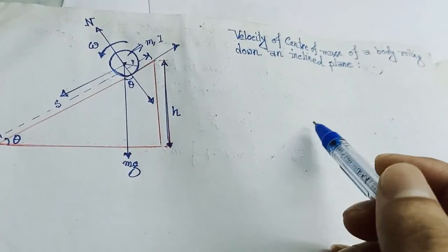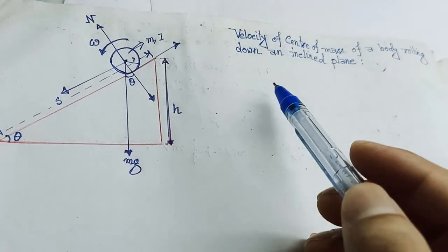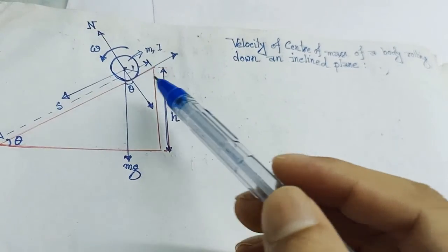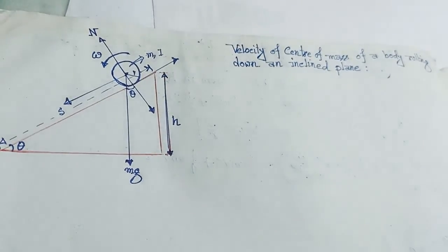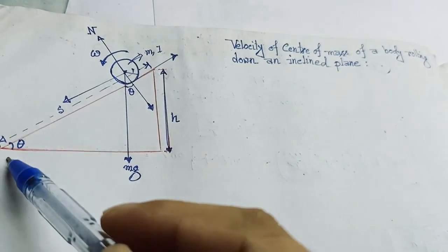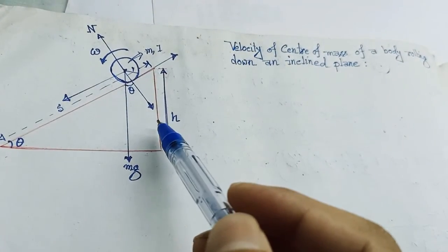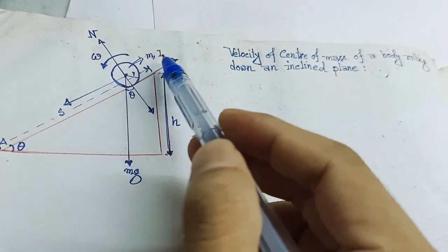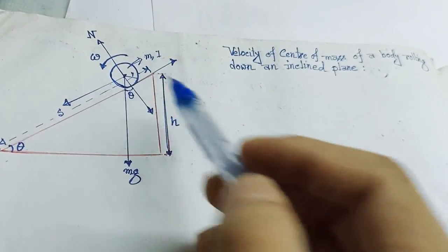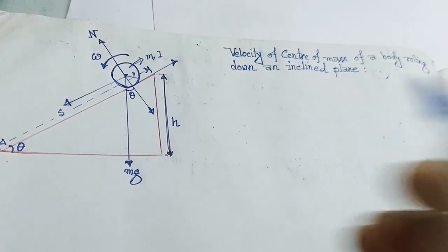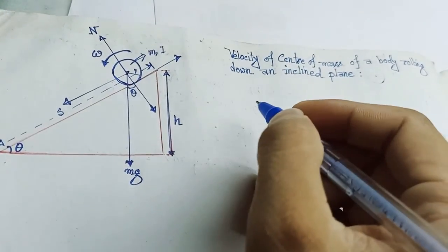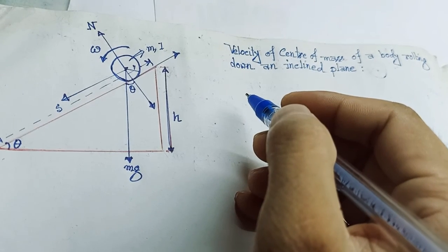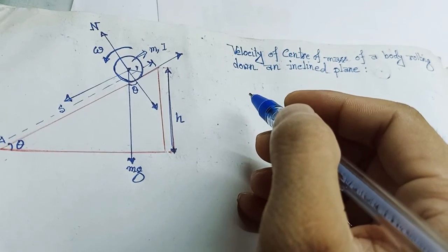We'll find the velocity of center of mass of an upper body which is rolling down an inclined plane of angle of inclination theta and height h. That is a simple cylinder of mass m, moment of inertia i, and radius r. For finding the velocity of center of mass, here's what we'll do.